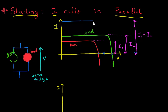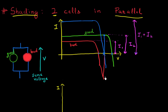So if I draw my IV characteristic like this, I'll notice that when I'm at this particular voltage, my good cell is essentially carrying current in a mode which is producing power, while my bad cell is essentially consuming the power. It has a current which is equal but in the opposite direction, and it's consuming power instead of producing power. But the overall system essentially has zero current output.